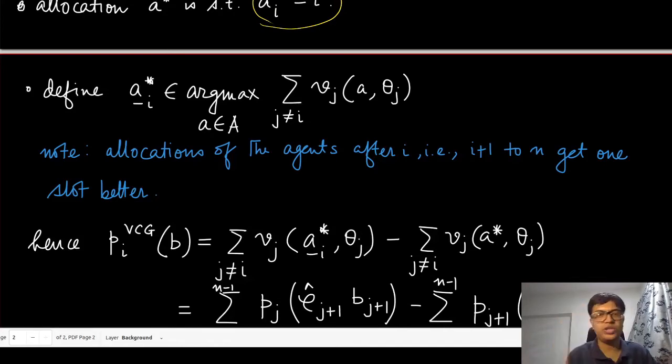The agents were sorted according to their ρ_i hat times b_i. If agent i is not present now, all the other agents starting from i+1 to n will now get allocated one slot above because that is now empty.